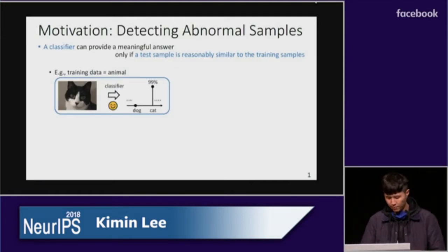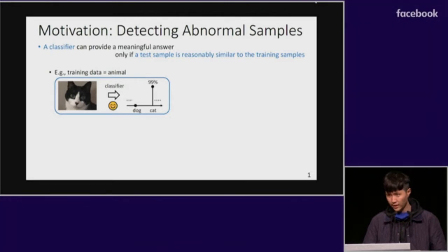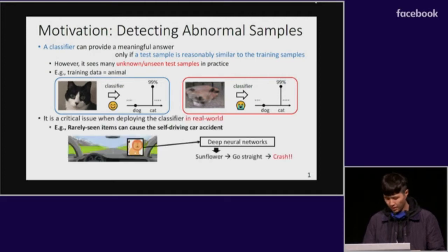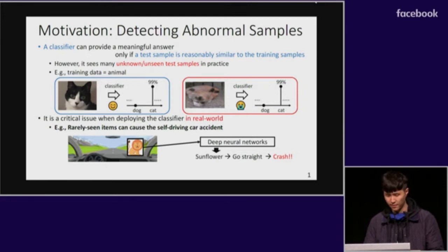A classifier can provide a meaningful answer only when a test sample is similar to the training samples. However, there should be many unknown samples that a classifier cannot give a right answer for, because it never saw them at training time. Such unknown samples cause a critical consequence when deploying the classifier in a real-world system.